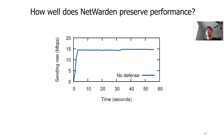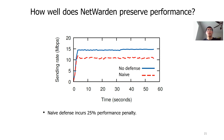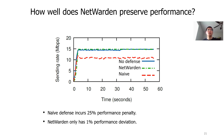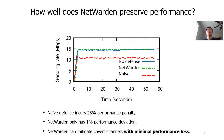Next, we evaluate how well Netwarden can preserve performance. The X-axis is time, and the Y-axis is throughput. When there is no defense, the throughput is stable at 15 Mbps. Naive defense incurs 25% performance penalty. Netwarden only has 1% performance deviation. We repeat the experiment for different network conditions, TCP variants, and applications, and we always observe similar results. So Netwarden can mitigate covert channels with minimal performance loss.